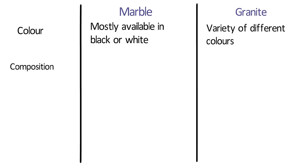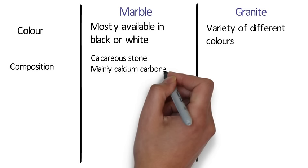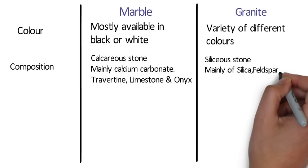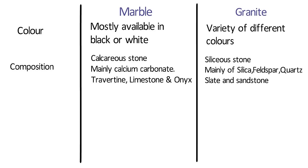Marble is a calcareous stone and it is made mainly of calcium carbonate. Travertine, limestone, and onyx are also calcareous stones. Whereas granite is a siliceous stone and it is composed mainly of silica, feldspar, and quartz, which are very hard minerals. Slate and sandstone are also siliceous stones.